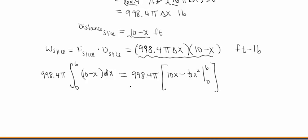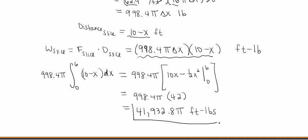So plugging all that stuff in, we end up getting 998.4π times 42. And again, just because I like to leave my answers as exact as possible, that's gonna give me 41,932.8π foot-pounds. Okay, sorry about that.